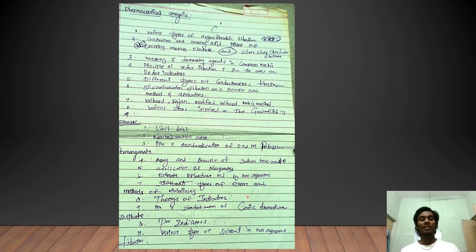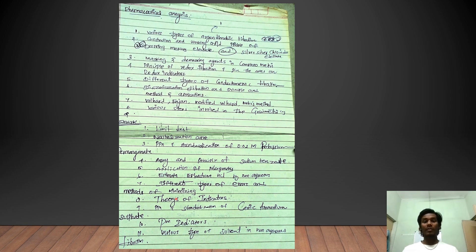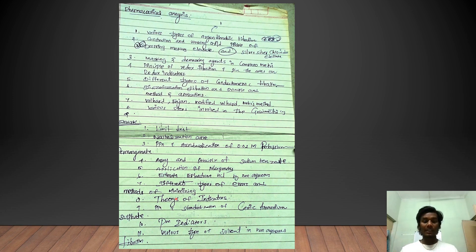Different types of errors and how to overcome them. Examples include human error and instrumental error, such as a camera or laptop issue, as well as weighing error. How to overcome these errors is an important topic to study.